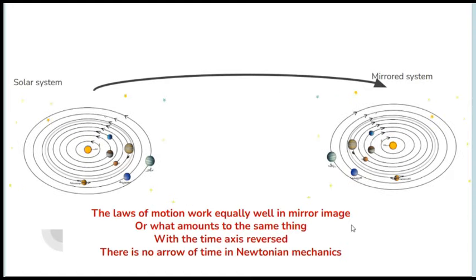It's because our laws of motion or Newton's laws of motion work equally well in mirror image, or what amounts to the same thing, if you reverse the time axis, express time in the negative direction, everything still works. So in Newtonian mechanics, there's no arrow of time. Whether time runs forward or backwards is immaterial.